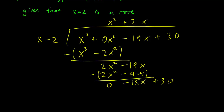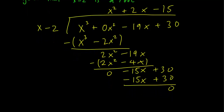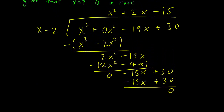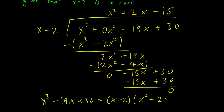We bring 30 down. And we ask ourselves: what term multiplied by x gets us negative 15x? The answer is of course 15. We multiply by x minus 2 to get minus 15x plus 30, and we get no remainder. This means that x cubed minus 19x plus 30 is equal to x minus 2 times x squared plus 2x minus 15.